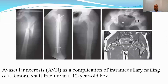This X-ray and MRI show avascular necrosis as a complication of intramedullary nailing for femoral shaft fractures in a 12-year-old boy. This most likely occurred because the piriformis fossa entry nail injured the blood supply to the femoral head, resulting in avascular necrosis.